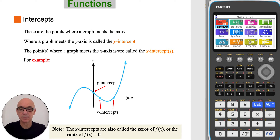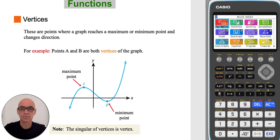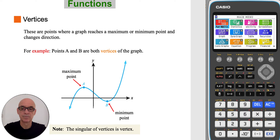The x-intercepts are also called the zeros of the function or the roots of the equation. The vertices are the points where a graph reaches a maximum or a minimum point and changes direction. For example, the points A and B are both vertices of the graph shown.